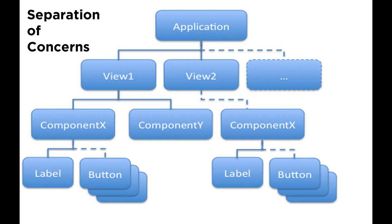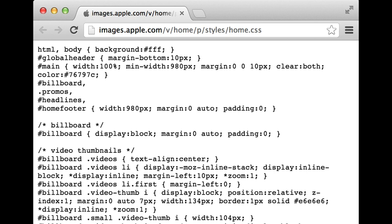Separation of concerns is a design principle for separating a computer program into distinct sections, such that each section addresses a separate concern. In the case of CSS, you can have one CSS document that defines the overall look and feel of a whole website of HTML documents.